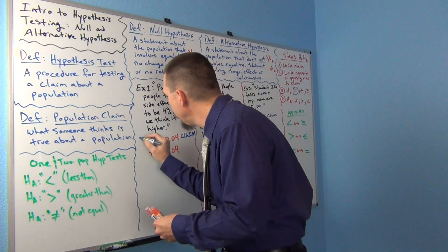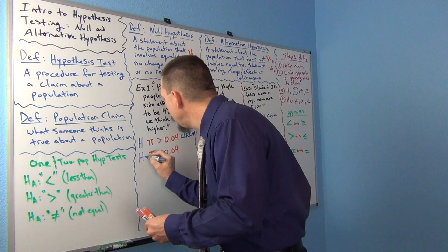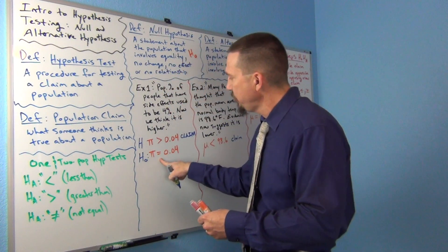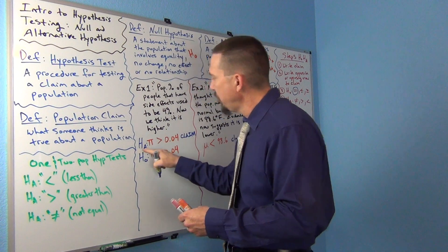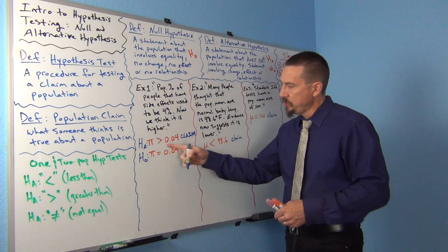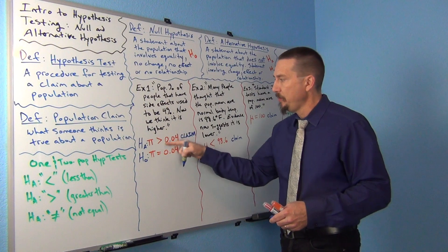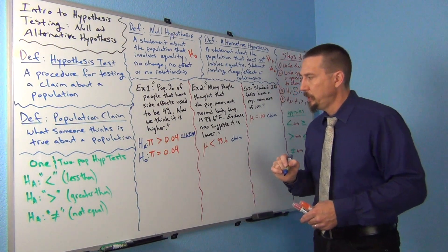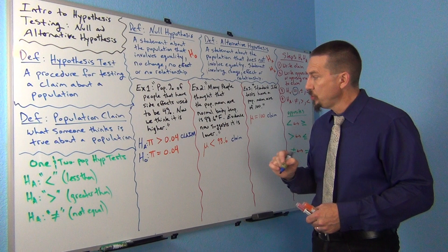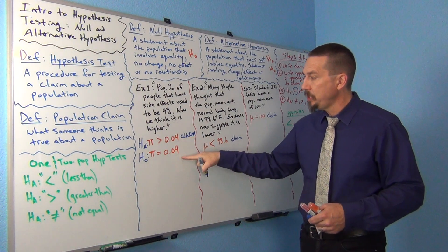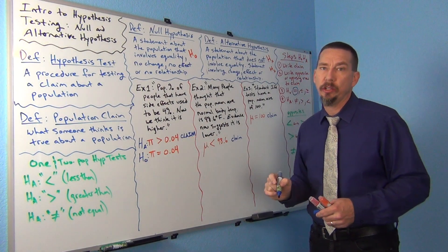This one would be the null hypothesis — the one that has equal to. And this one would be the alternative hypothesis, HA. That's going to be a greater than, which does not have an equal to part. So you write down the claim, write down the opposing view, then decide what's the null and alternative.